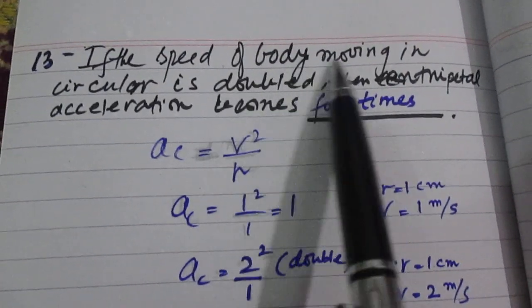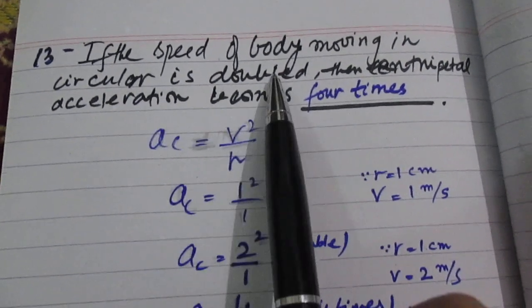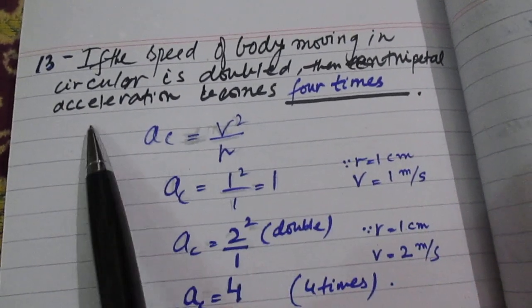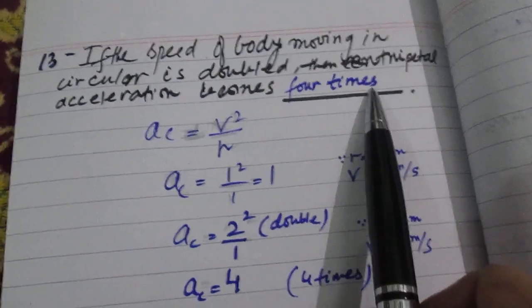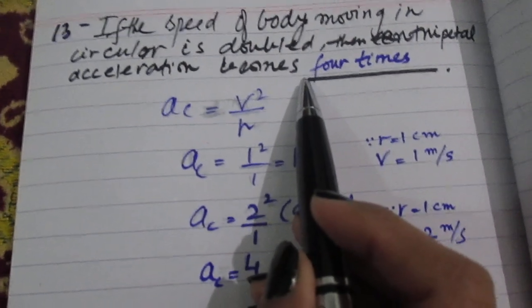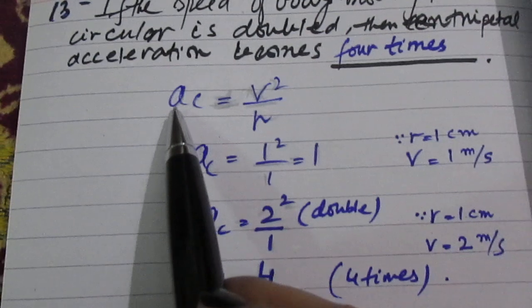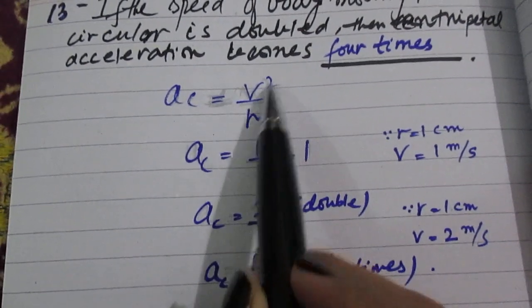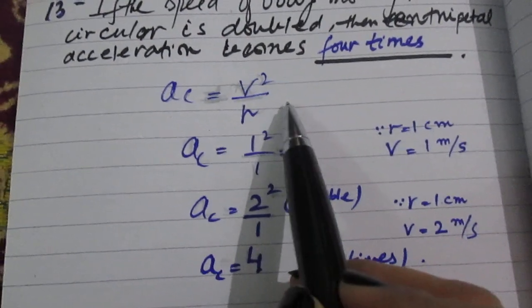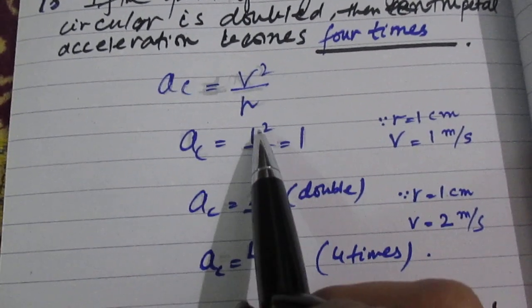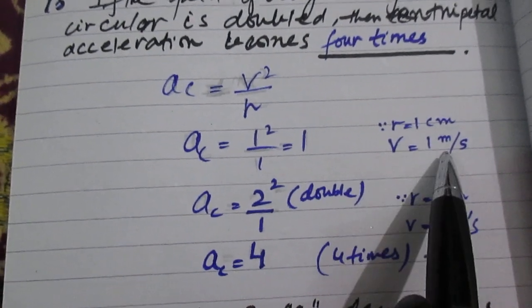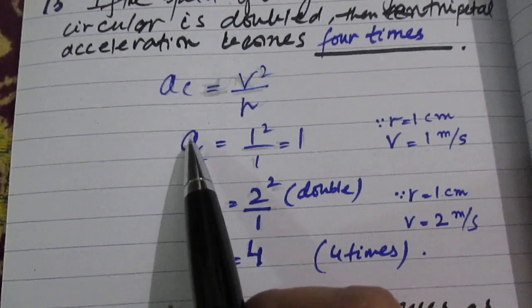If the speed of a body moving in a circle is doubled, the centripetal acceleration becomes four times. How is it possible? These MCQs are asked many times over 10 years. Its logic is that we know centripetal acceleration is v² upon r, speed squared upon r. If we assume the radius is 1 cm and your speed is 1, your centripetal acceleration is 1.